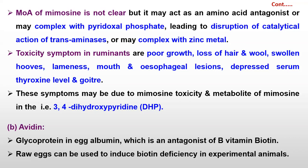Next to mimosine is avidin, which is a glycoprotein found in egg white — albumin — that binds against the vitamin biotin. Raw egg consumption containing avidin may cause deficiency of biotin. This is all about today's class.